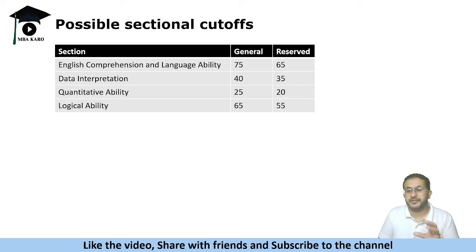75 is a minimum. Similarly, data interpretation 40 would be the maximum. It won't go beyond that because even attempting three sets was a good challenge for most people, and if you did 12 questions then great. Very few people crossed this number.